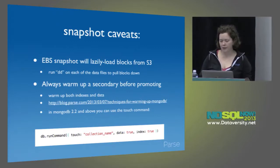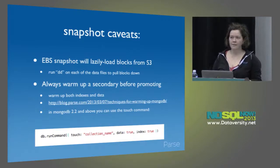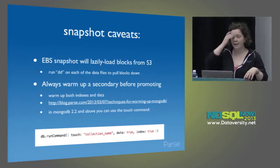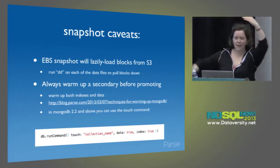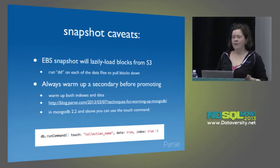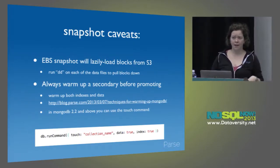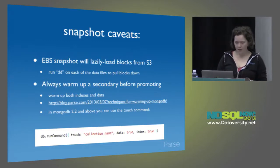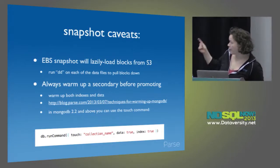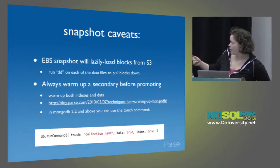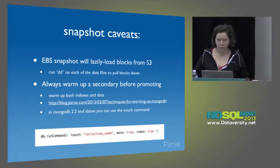Some important caveats about snapshot restores: if you want to bring up a new node and make it the primary, don't do it until you've pulled down all the blocks from S3. EBS snapshots are fast because the blocks still live on S3 until you pull them down — it pulls them down very lazily. Whenever I restore a new node from snapshot, I go into the data directory and do a dd on all the data files to pull them down and write them to /dev/null. You should also warm it up — get your working set into RAM.